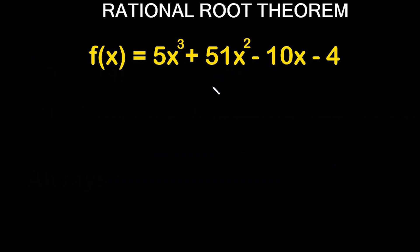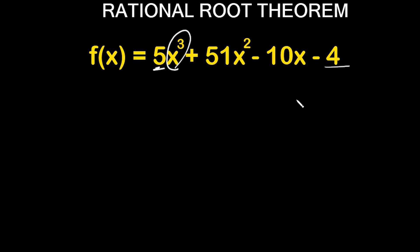In the first example, the first thing you want to do is identify your leading coefficient. In this particular problem my leading coefficient is 5, and I know that because I'm looking at the variable with the highest exponent value — in this case x to the third power, meaning this polynomial has a degree of 3. To identify your leading coefficient, look to the variable with the highest exponent and it's the number in front, in this case 5. So my leading coefficient is 5 and my constant is negative 4.